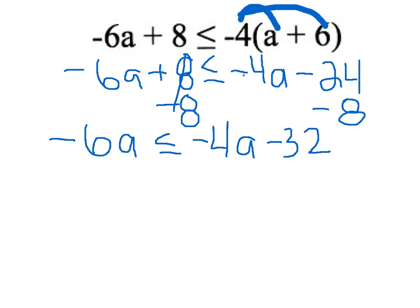We still have more like terms to combine, so we're going to add 4a to both sides. We're going to get negative 2a is less than or equal to negative 32.